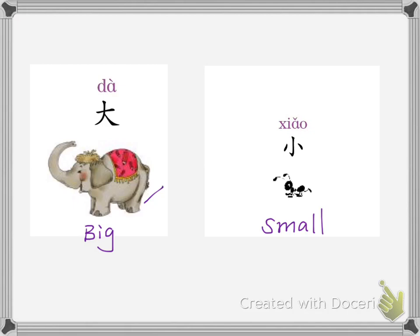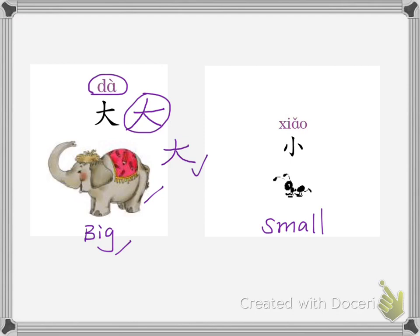This is the fifth stroke, and this is the fifth stroke. This looks ugly; this looks better. Correction for the stroke order: start the middle part first, then finish the two sides.